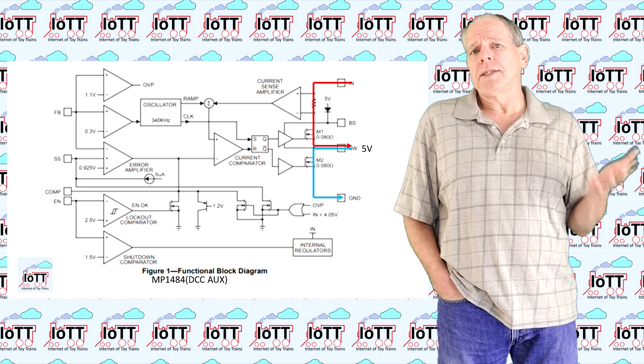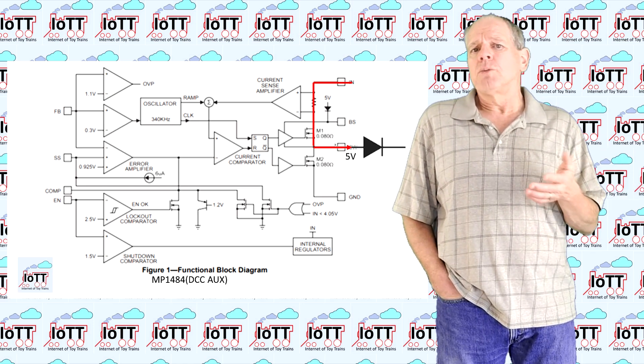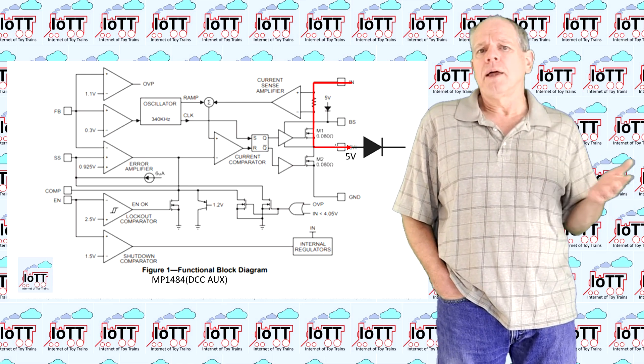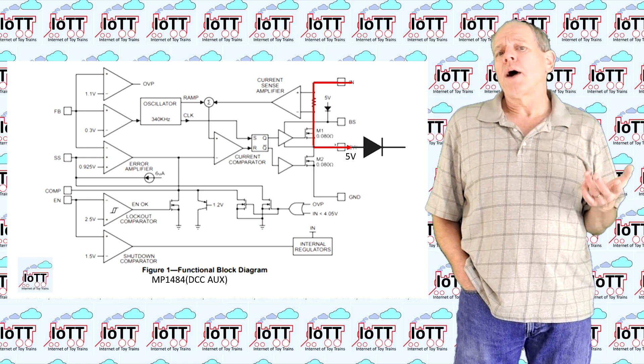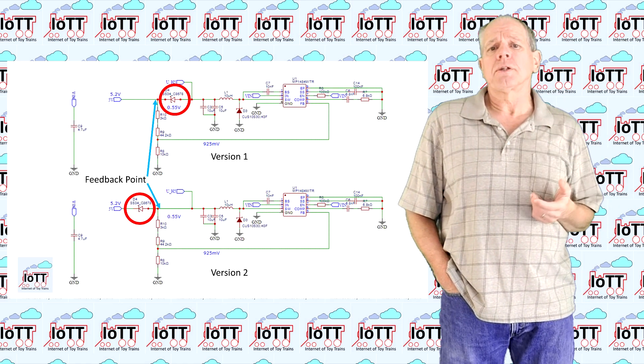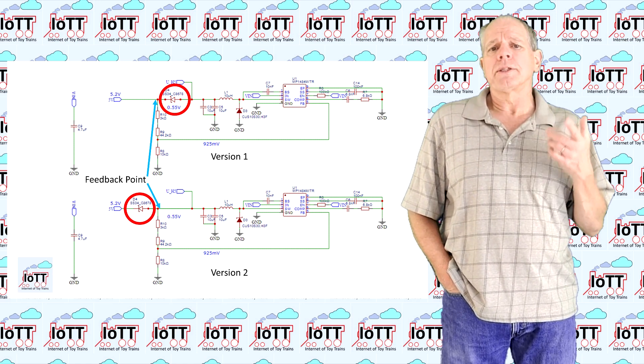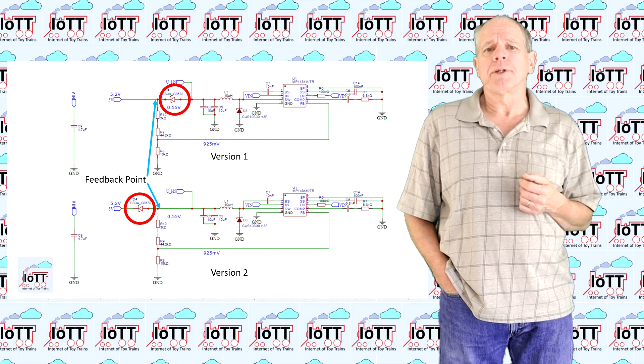The solution to the problem was simple though. All I needed to do was adding a diode to prevent current from going into the MP1484 and that should fix the problem. So, I reinstalled the soft start capacitor and added a diode into the current supply path. In fact, I built two versions to test the difference.